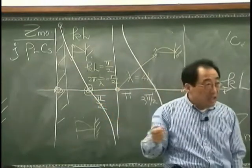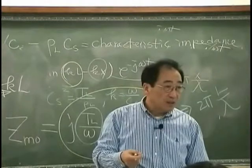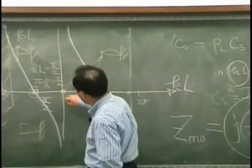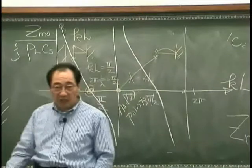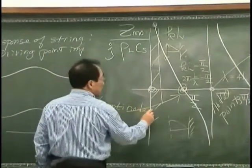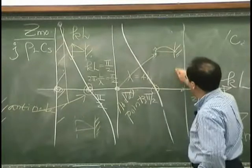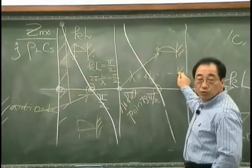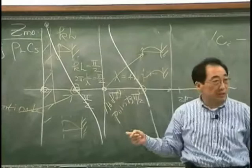Infinity means that it's not easy to move the point — driving point impedance being infinity means the velocity is zero. So at this point we have a nodal point, or nodal point excitation case. In this case we have an antinode. What happens over here? We have a wave that looks like this: one half wavelength and a quarter wavelength, and so on.